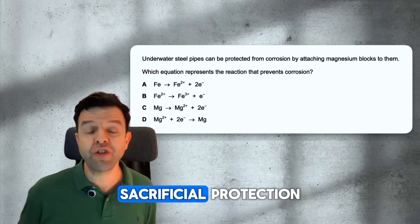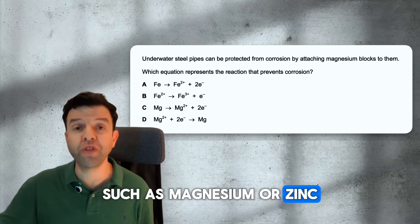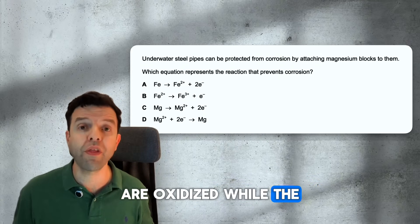During galvanization and sacrificial protection, metals that are more reactive than iron, such as magnesium or zinc, are oxidized, while the iron remains intact.